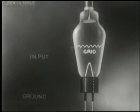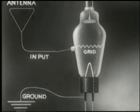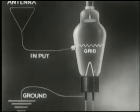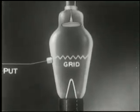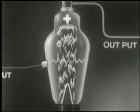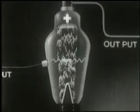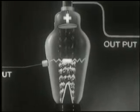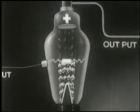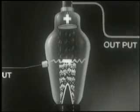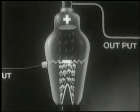To this grid we connect an input of some weak voltage which we wish to amplify — perhaps that of a faint radio signal from halfway around the world. Now let's see what happens. Every time a negative potential is impressed on the grid, even though it be very minute, it has a large effect in reducing the number of negatively charged electrons which would otherwise keep flying from cathode to anode.